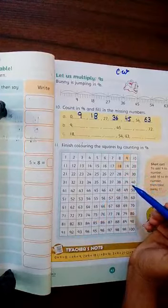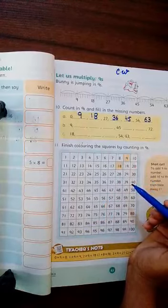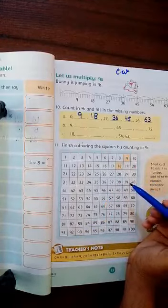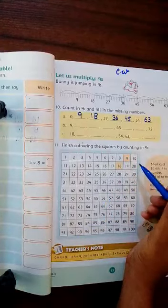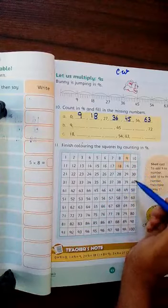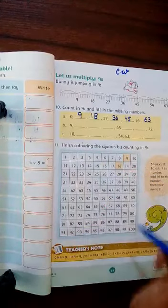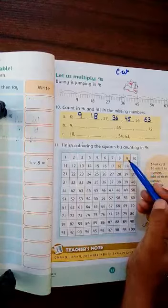The second part of page 61 is the same. In a square form, we have counted 1 to 100. So you have read the 9 table.